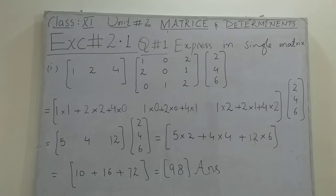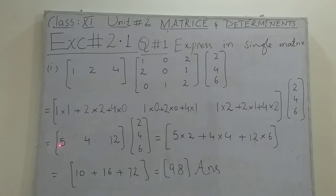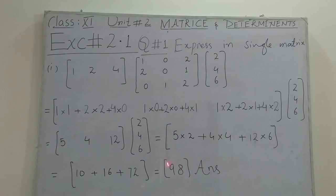Now we check if we can multiply the next two matrices. Number of columns of the first matrix: one, two, three. Number of rows of the second matrix: one, two, three. So multiplication is possible. We have a row matrix and a column matrix. Multiplying: five into two plus four into four plus twelve into six, which gives ten plus sixteen plus seventy-two, giving a final answer matrix of 98, which is the required answer for part one.